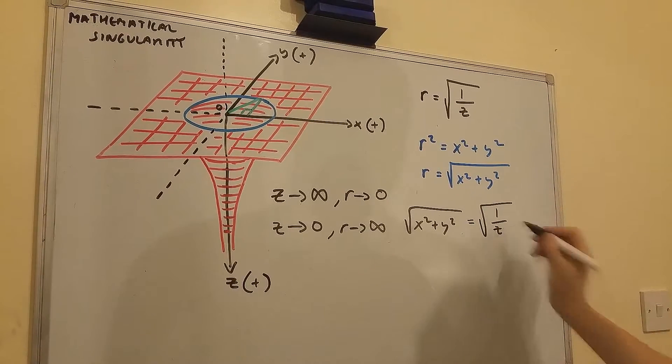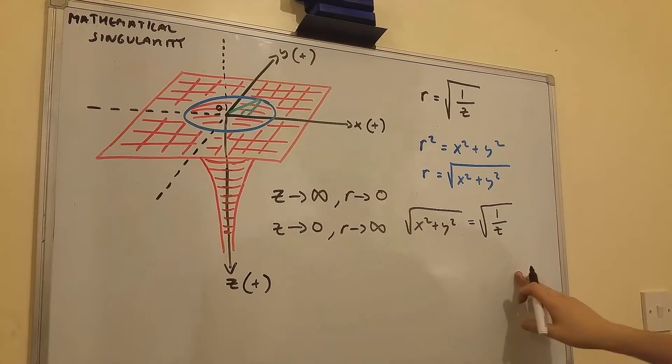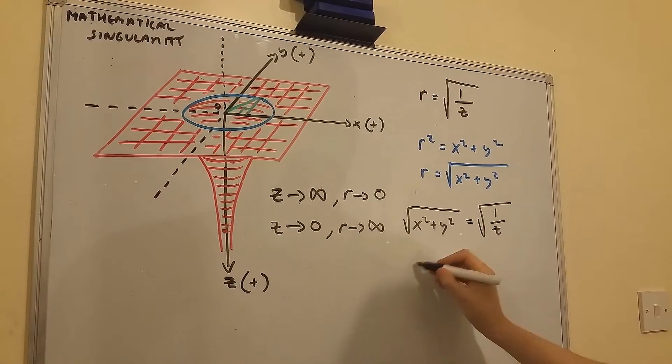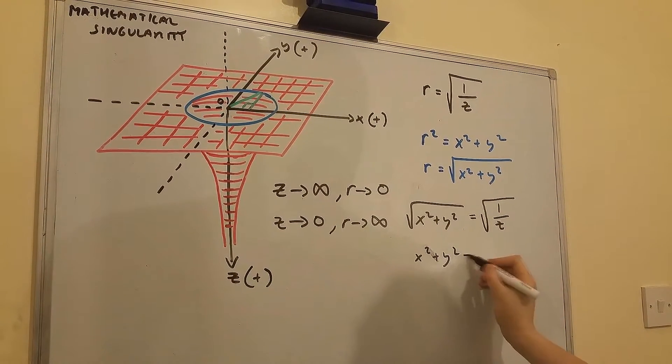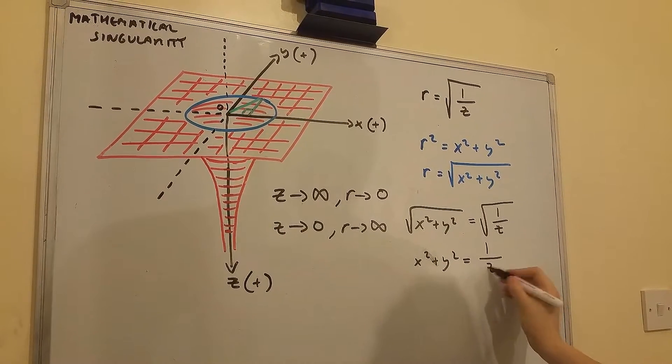Now from here we're going to get x squared plus y squared is 1 over z.